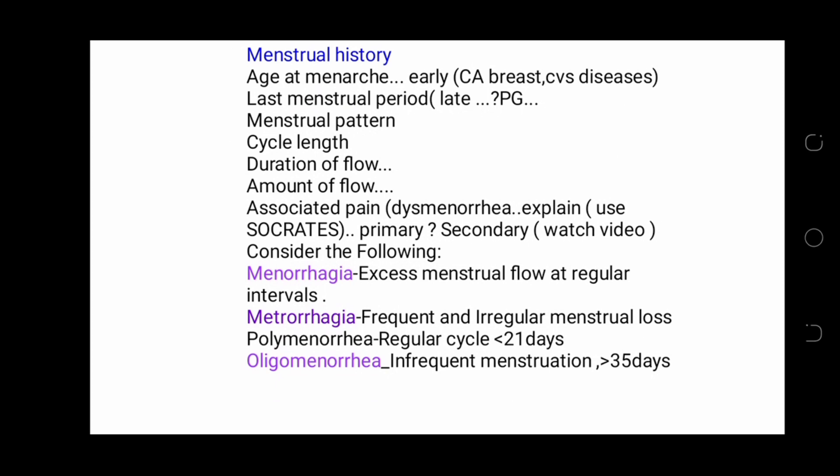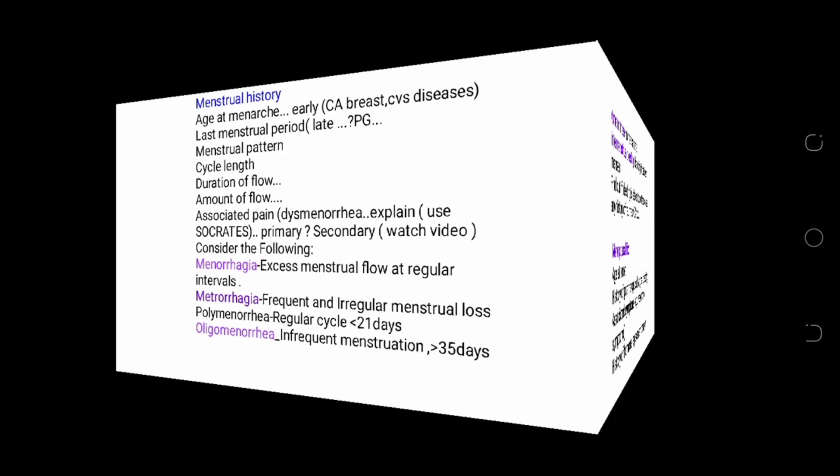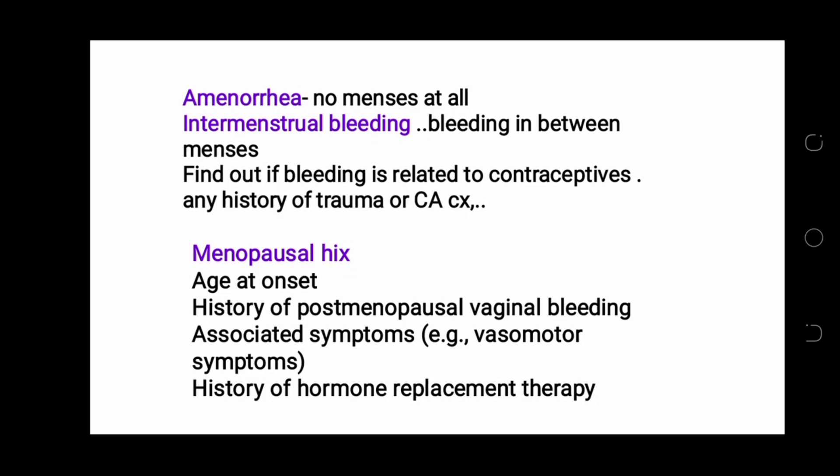Consider menorrhagia — excess menstrual flow at regular intervals. Consider metrorrhagia — frequent and irregular menstrual flows. Polymenorrhea — regular cycle less than 21 days. Oligomenorrhea — infrequent menstrual periods greater than 35 days. Amenorrhea — no menses at all. And intermenstrual bleeding — bleeding between periods; find out if bleeding is related to contraceptives, any history of trauma, or even history of cervical cancer.